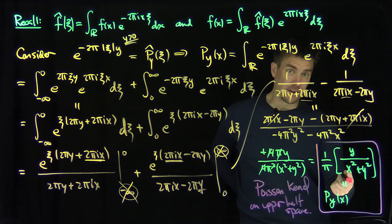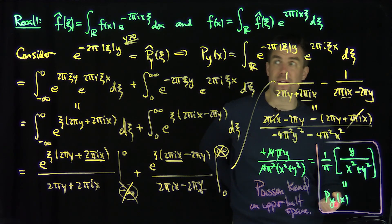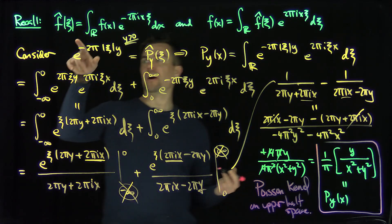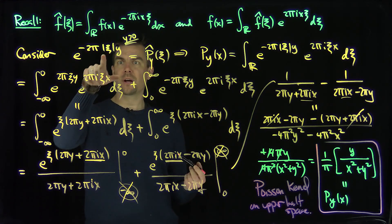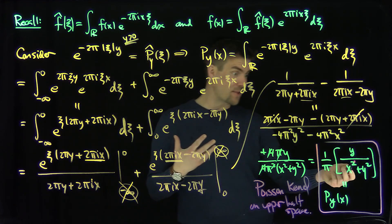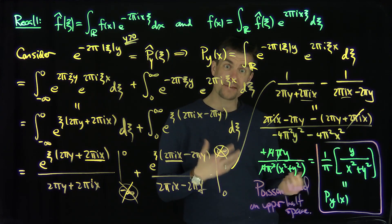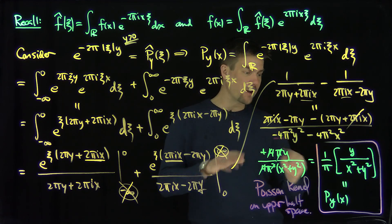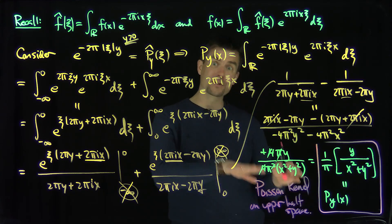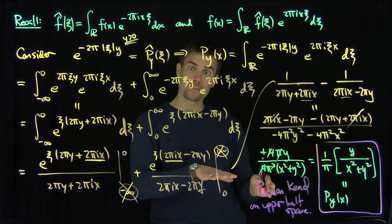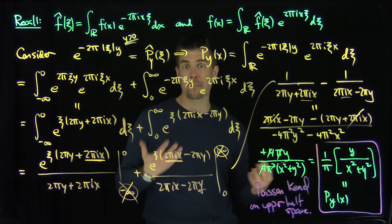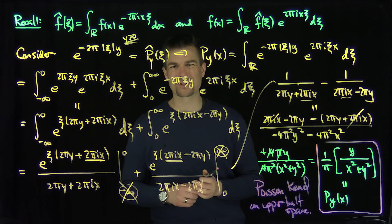It's easy to see that this Poisson kernel integrates to one. Using Fourier inversion, if we plug in ξ = 0 into p-hat_y(ξ) = e^{-2π|ξ|y} we get one, so the function integrates to one. It is a non-negative function on the upper half space that integrates to one, and mass concentrates toward the origin as y → 0. So this Poisson kernel is an approximation to the identity, and we'll use that when we solve the Dirichlet problem for the Laplacian in the upper half space in further videos. Thank you very much.